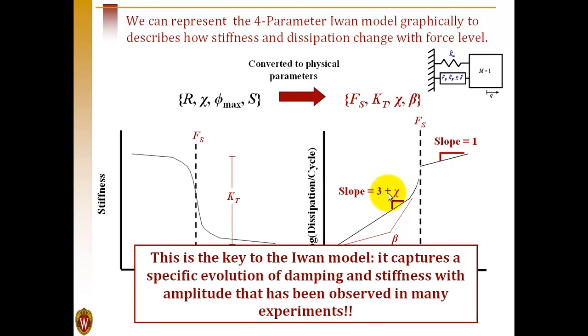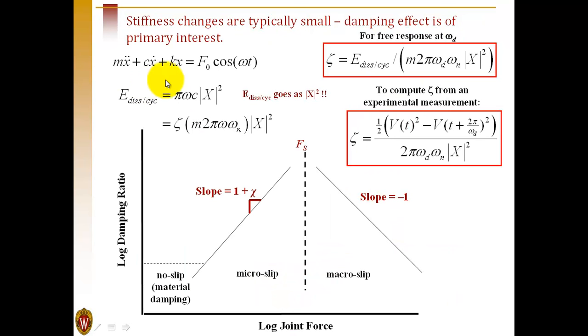In summary, the IWAN model gives a single model that captures behavior that's observed both analytically and experimentally. If we think about this model as applying to a one degree of freedom system, we can actually define the system-level damping.